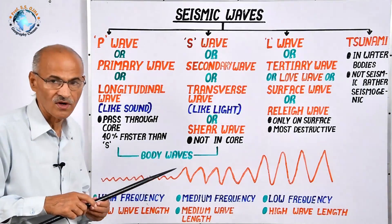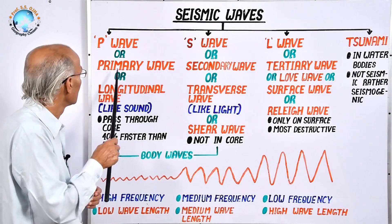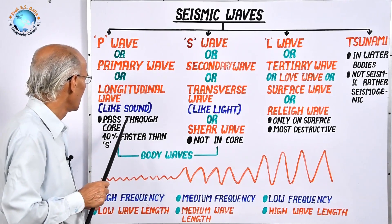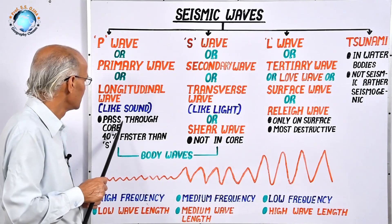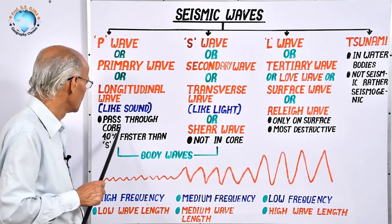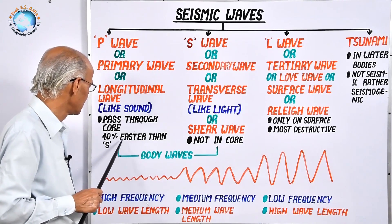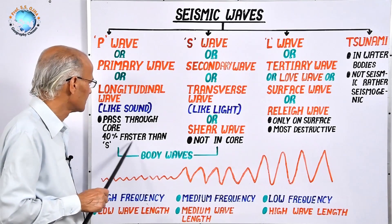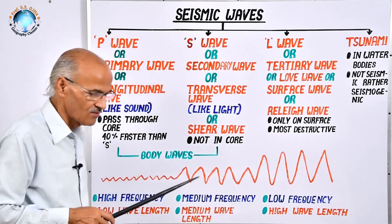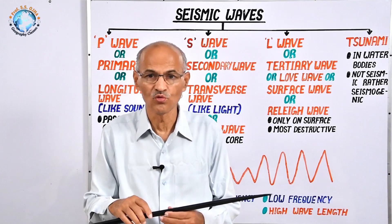The P wave travels like sound — forward and backward — so it is called primary wave, longitudinal wave. It is of very short wavelength, which is why it passes through the core of the Earth. Its speed is 40 percent faster than the speed of the secondary wave.